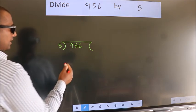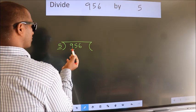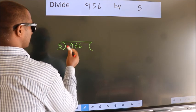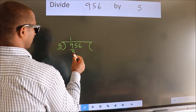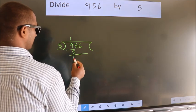Next. Here we have 9, here 5. A number close to 9 in the 5 times table is 5 once, which is 5. Now we should subtract. We get 4.